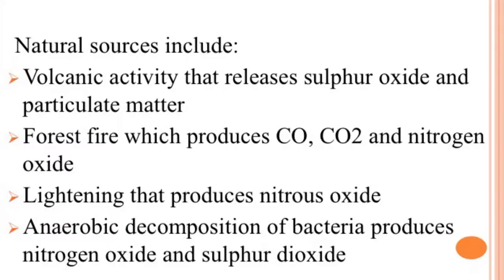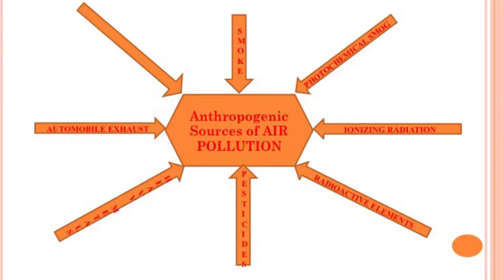Having talked about the various causes of air pollution, let us talk about the various sources. Sources of air pollution can be both natural and manmade. The natural sources include volcanic activity that releases sulphur dioxide, sulphur oxide and particulate matter; forest fires which produce carbon monoxide, carbon dioxide and nitrogen oxide; lightning that produces nitrous oxide; and anaerobic decomposition by bacteria which produces nitrogen oxide and sulphur dioxide. Manmade sources include smoke, photochemical smoke, ionizing radiation, radioactive elements, pesticides, heavy metals, and automobile exhaust.